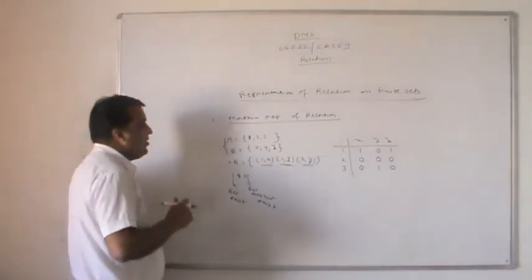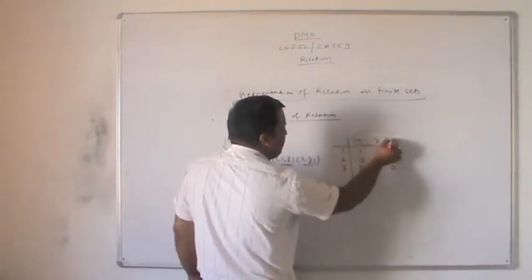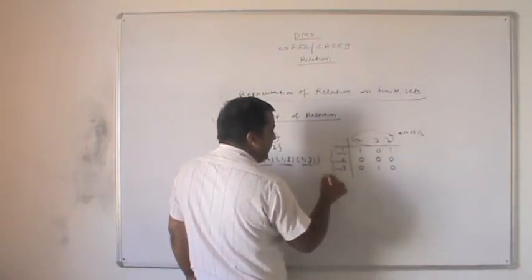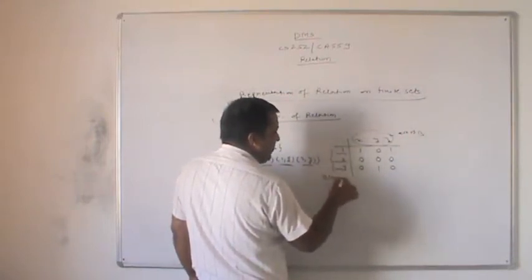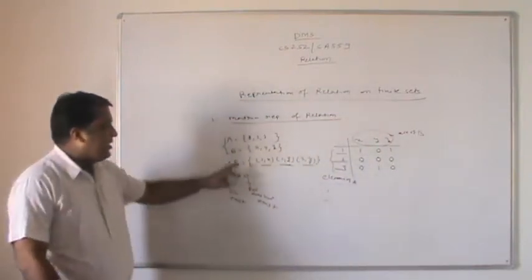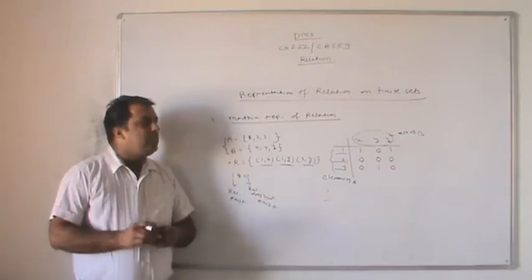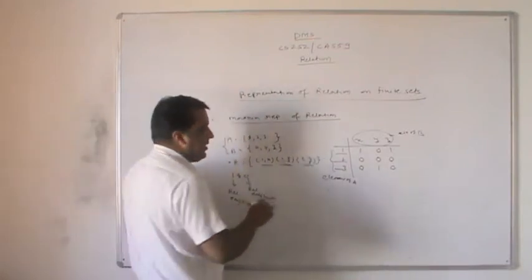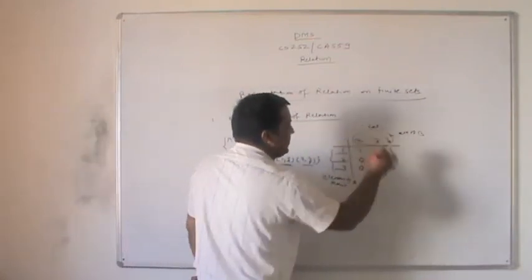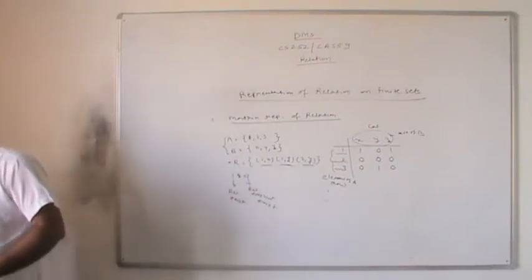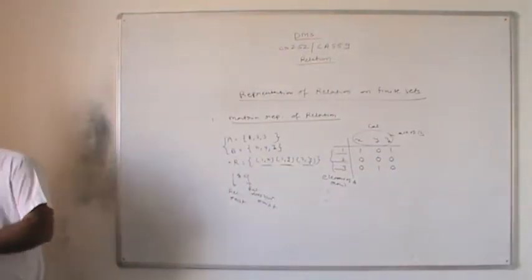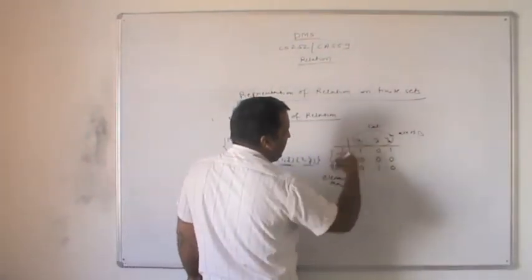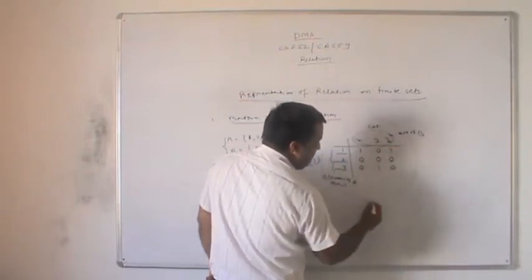To remember: x, y, z are elements of B represented in column-wise, and 1, 2, 3 are elements of A represented in row-wise. This type of representation is also called the matrix of relation.